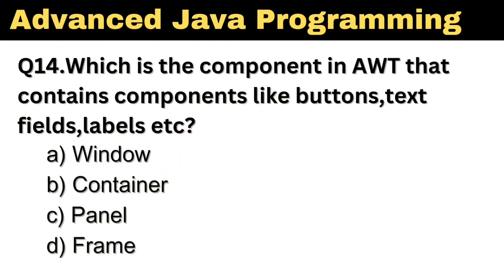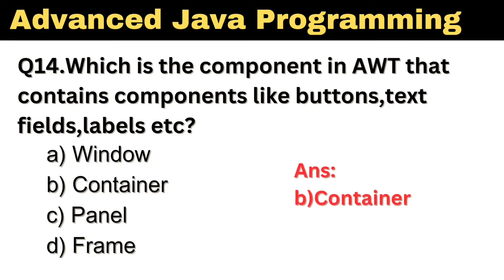Question number 14: Which is the component in AWT that contains components like button, text field, labels, etc.? The right answer is Option B: Container.